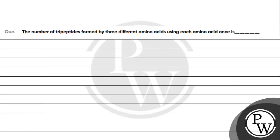The question says the number of tripeptides formed by three different amino acids using each amino acid once is... We will show how many number of tripeptides can be made. The key concept for this question is formation of tripeptides.